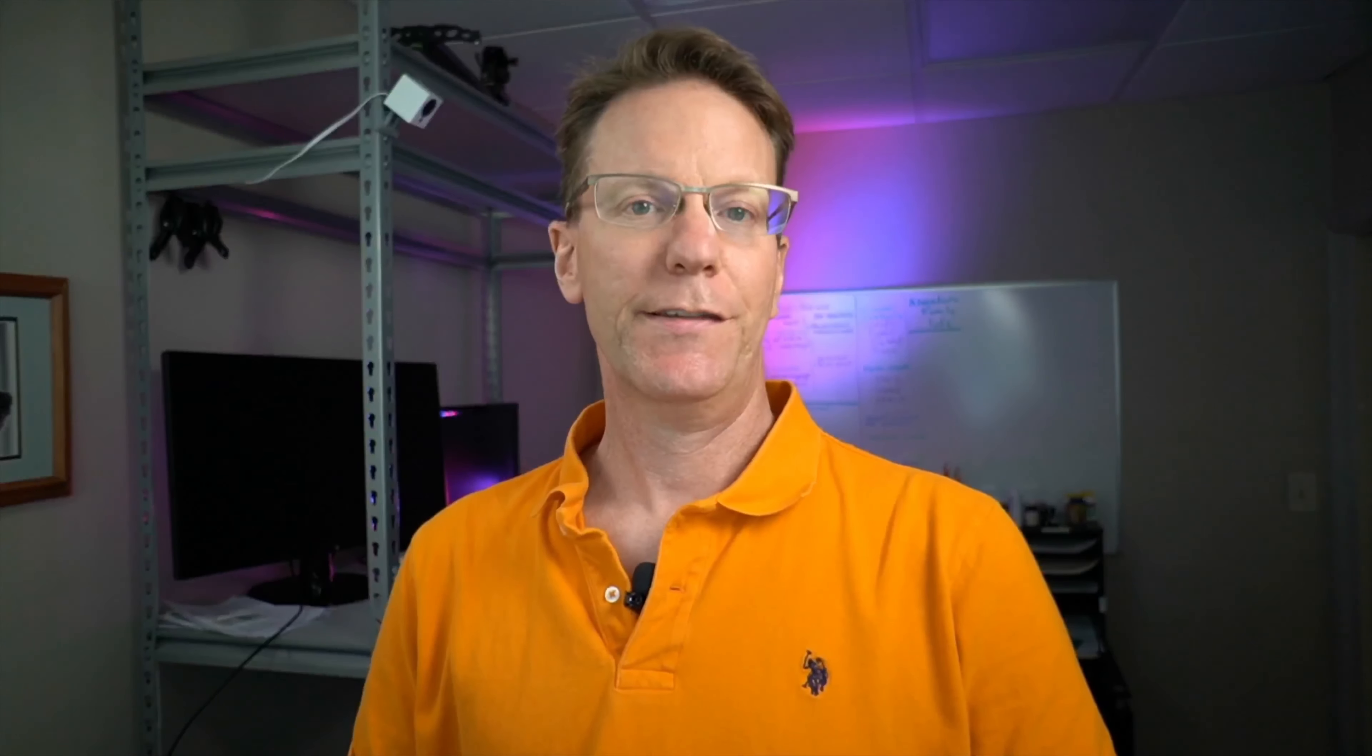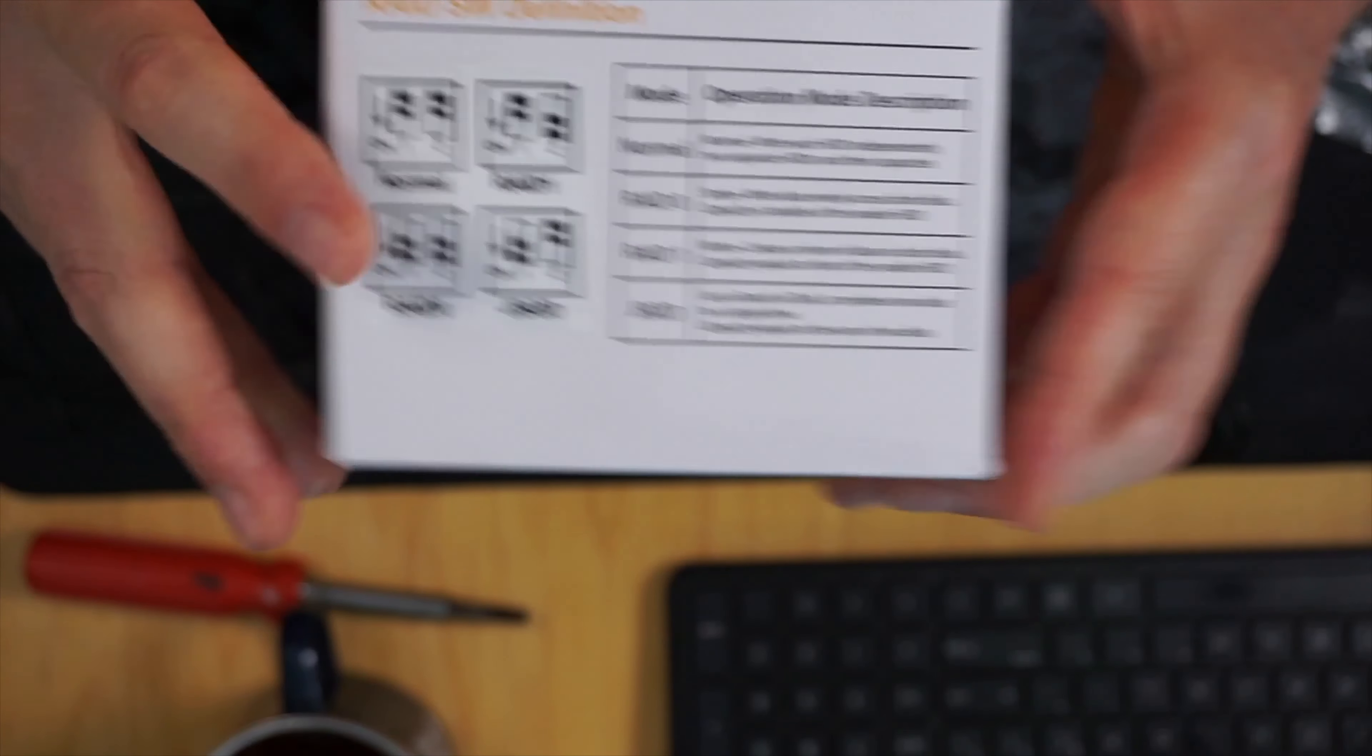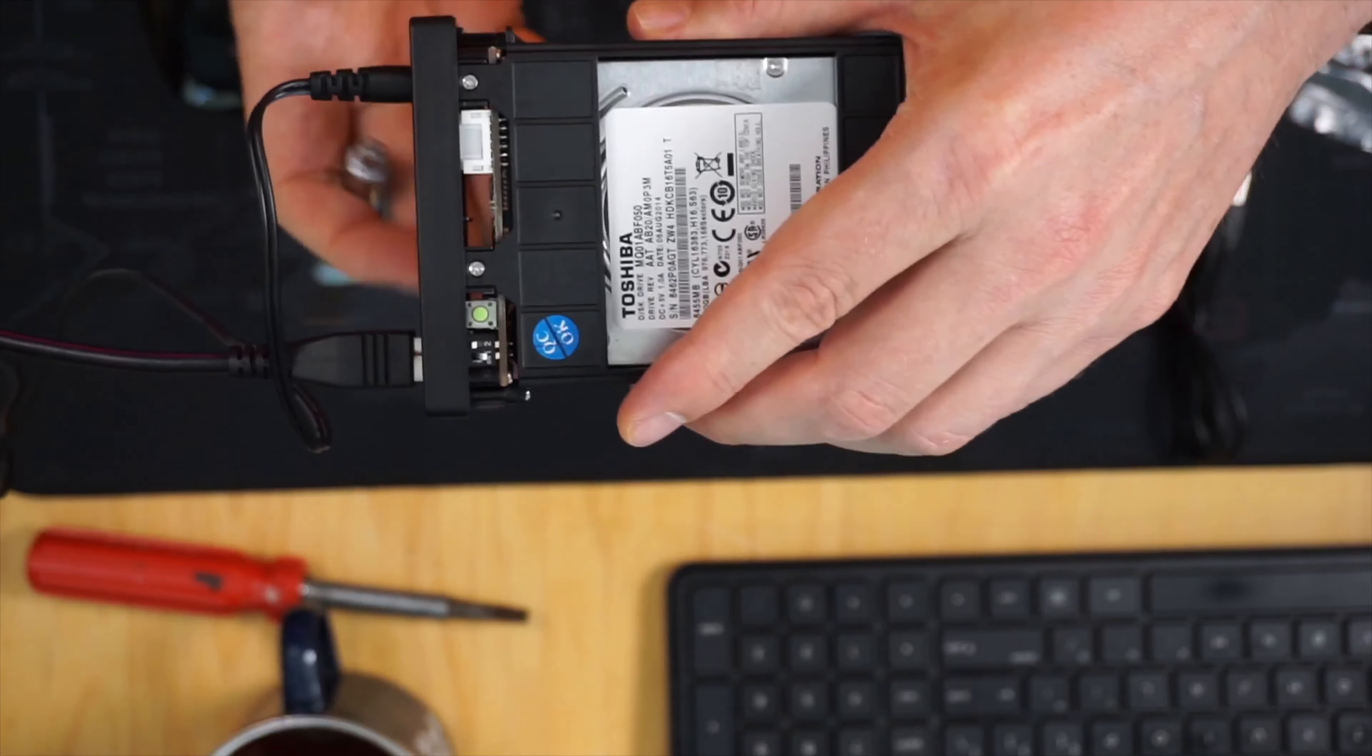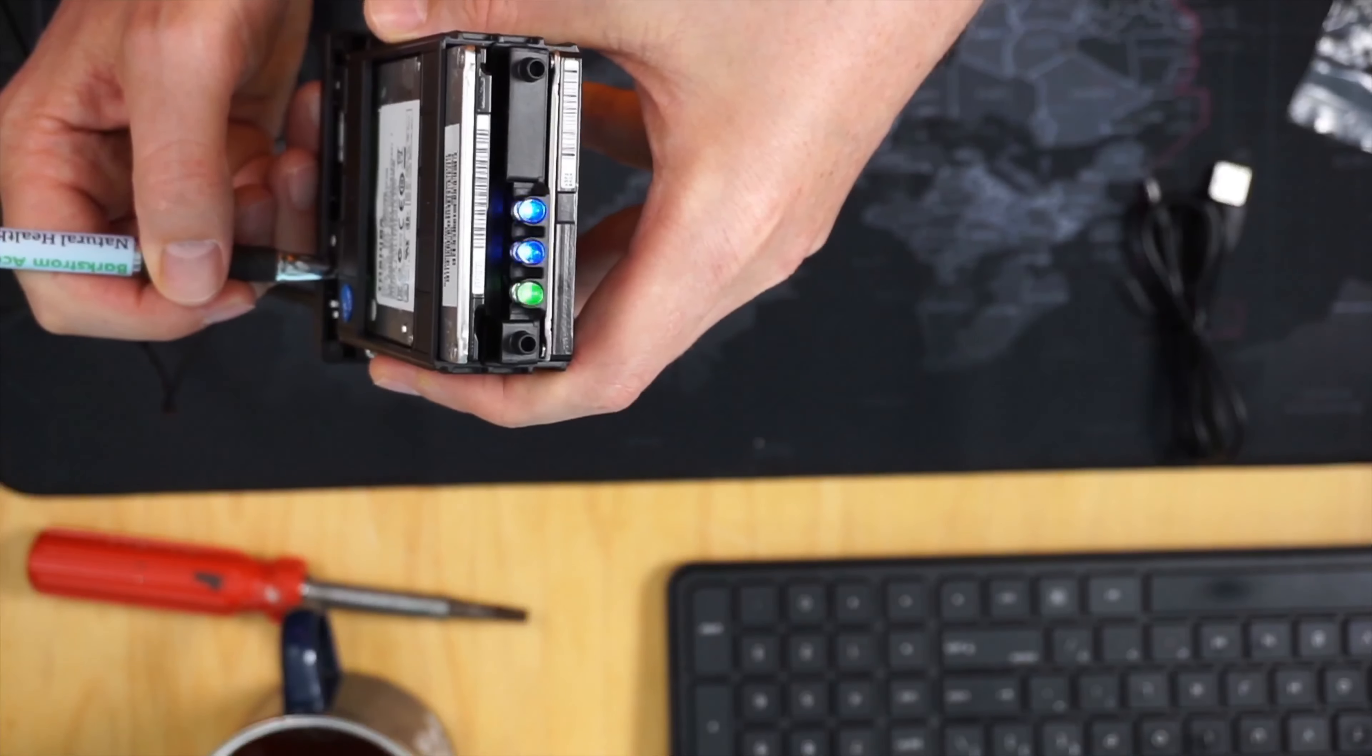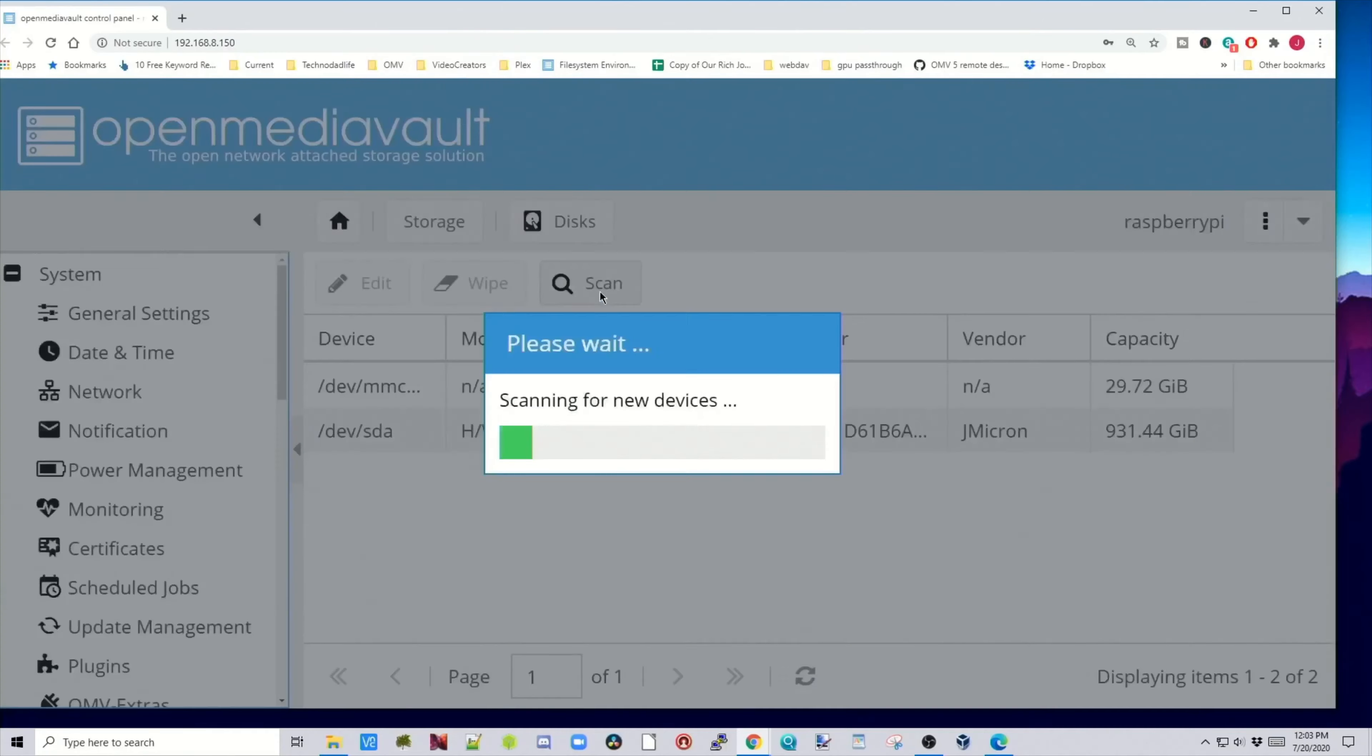So now we just have one more to test out, which is JBOD, which is just a bunch of disks. And so with JBOD, the first one is down and the second one is up. So we're going to switch that one. So we got one down, one up. Press down the reset switch. Now we go back to Open Media Vault, hit Scan again, and there you can see now we're in JBOD mode.